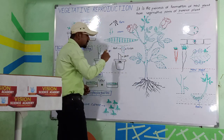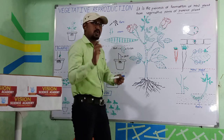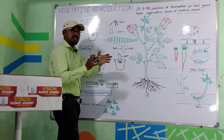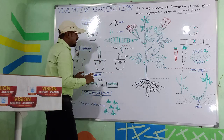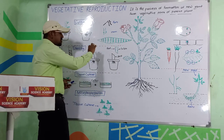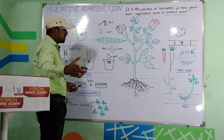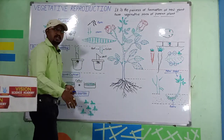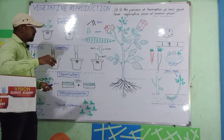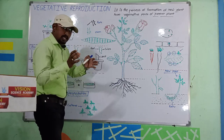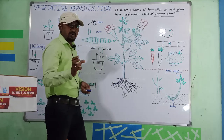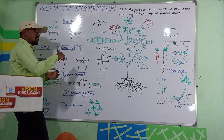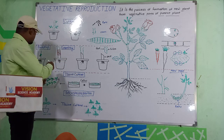The scion — S-C-I-O-N — is the desired plant that we want to grow. We need to grow the scion on the stock plant. If we want a particular colour or flowers, we need to use grafting. One type of grafting is bud grafting, where instead of using a stem cutting, we use a bud.